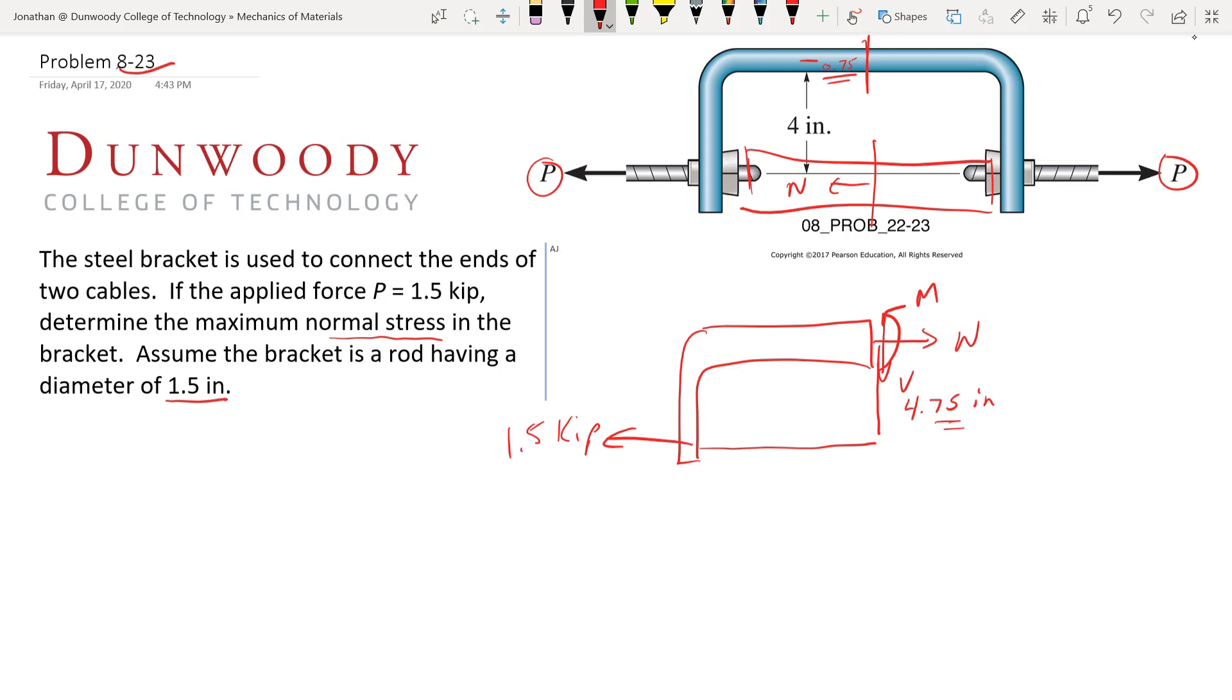So as we look at this, what do we have? Well, I'm going to put in a point O here. So the sum of our forces, I should probably put in a coordinate system here as well. There's X, here's Y. And sum of forces in X has to be 0 equals what do we have? We have negative 1.5 kip plus N. So N, unsurprisingly, is 1.5 kip.